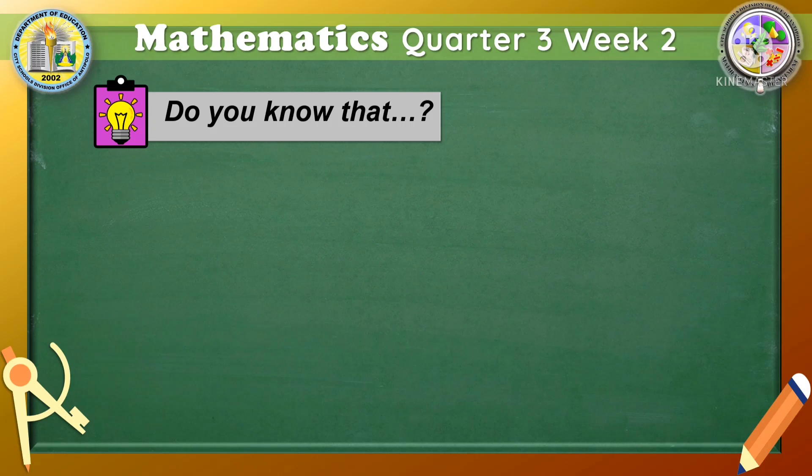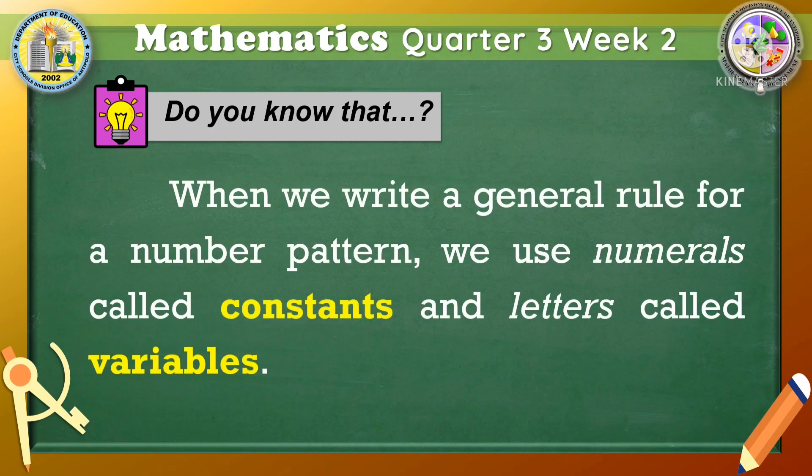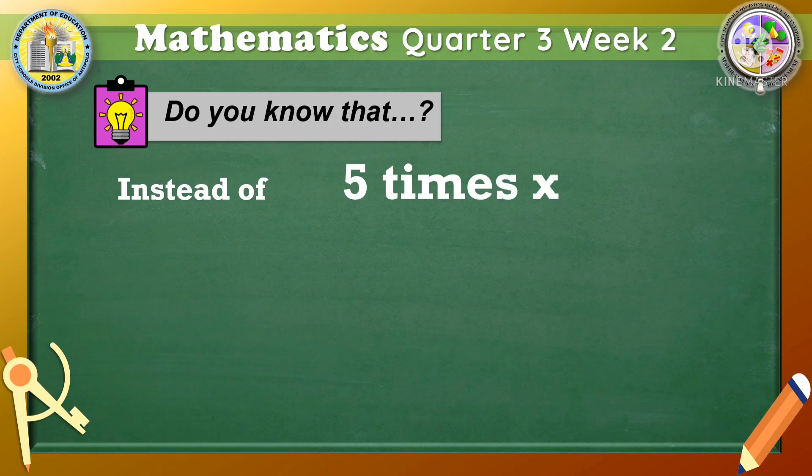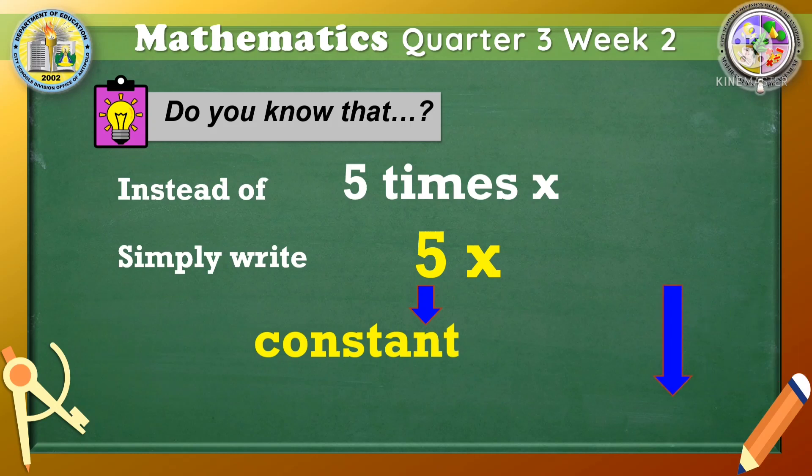Let's begin with a little trivia. Do you know that when we write a general rule for a number pattern, we use numerals called constants and letters called variables. Instead of writing 5 times x, we may simply write 5x. 5x is considered an expression. The numeral 5 is the constant, while the letter x is the variable.